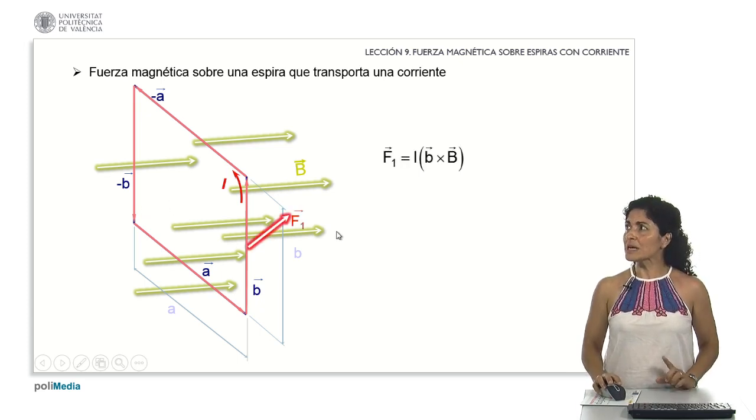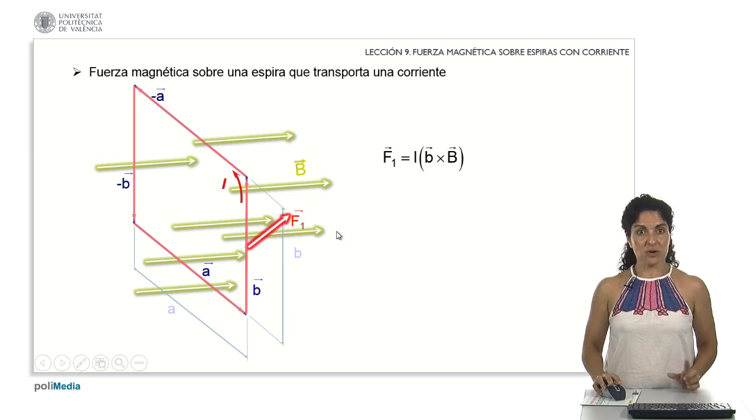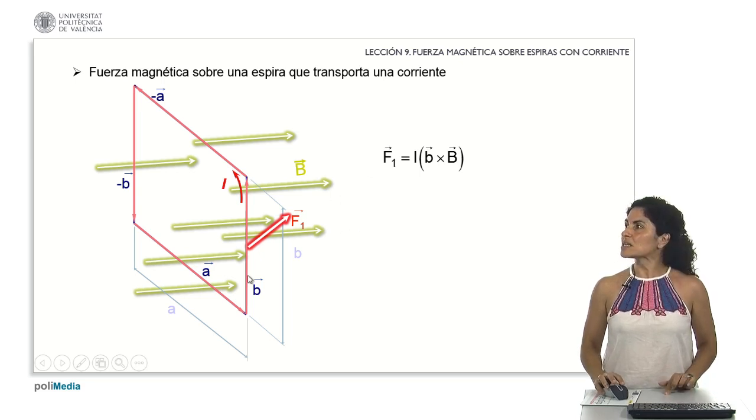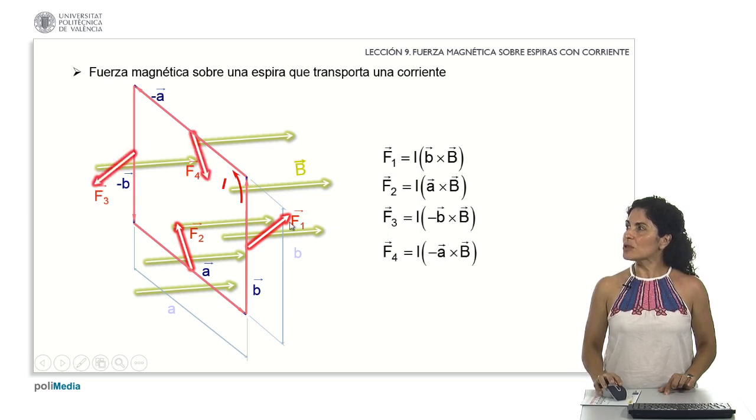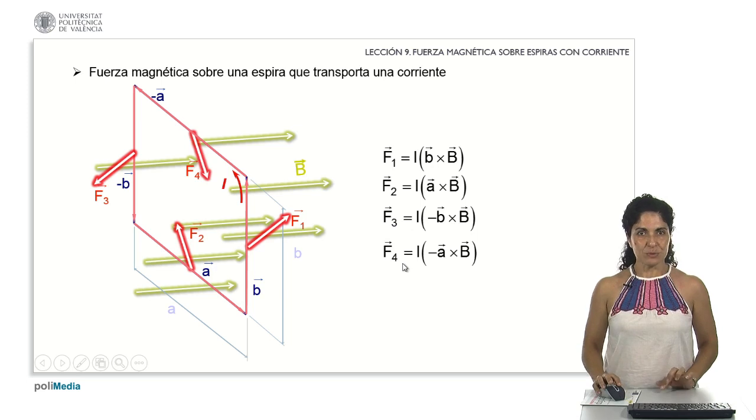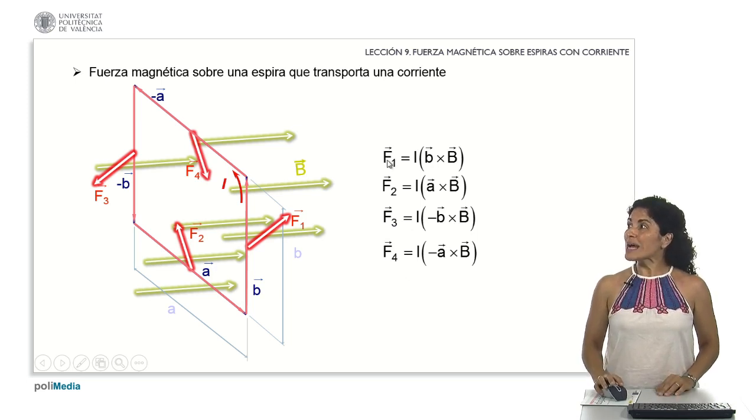We will have, therefore, that taking into account the previous expression of how to determine the magnetic forces, on this side will act a force 1 defined by this vector product, on the lower side the force F sub 2, on the left side F sub 3, and on the upper side F sub 4. Upon analyzing a little bit what we have just obtained, it becomes apparent that F sub 1 is identical to F sub 3, although in the opposite direction.